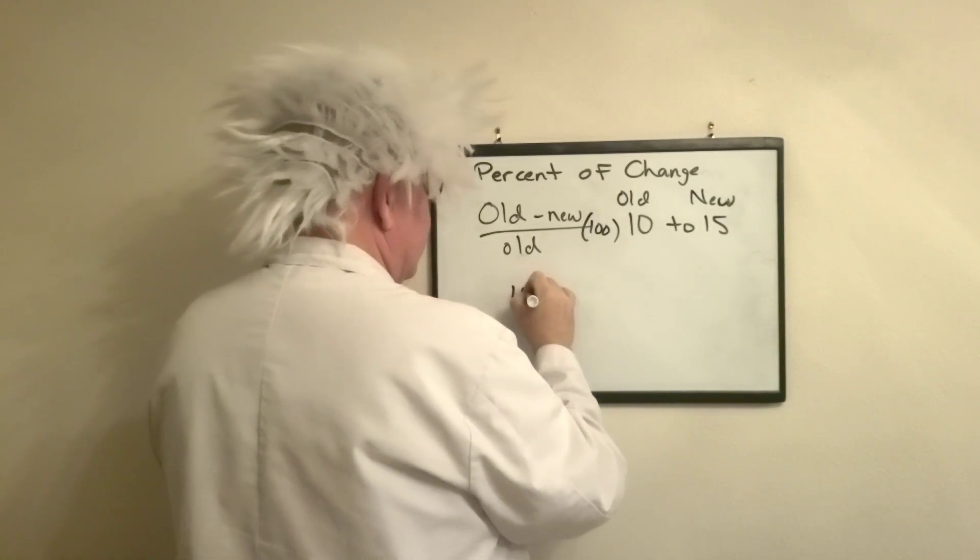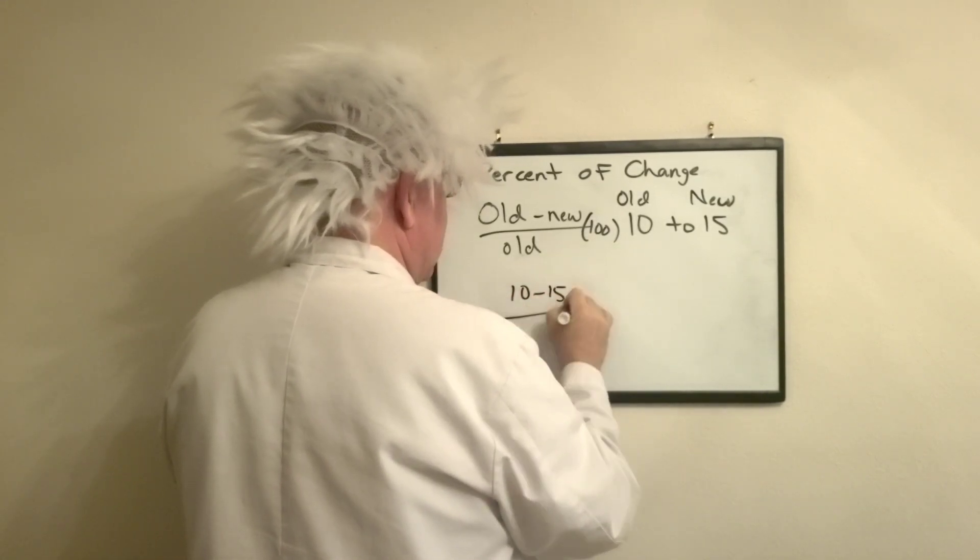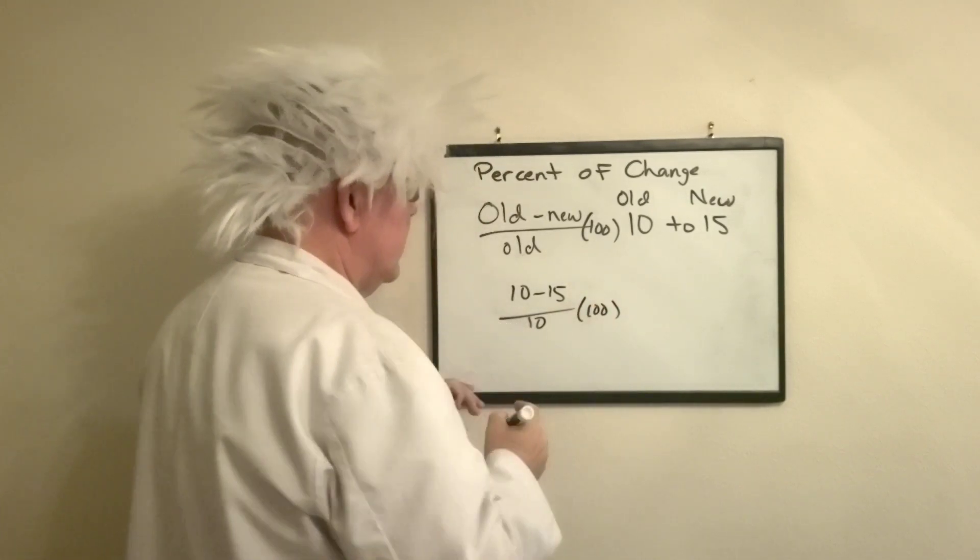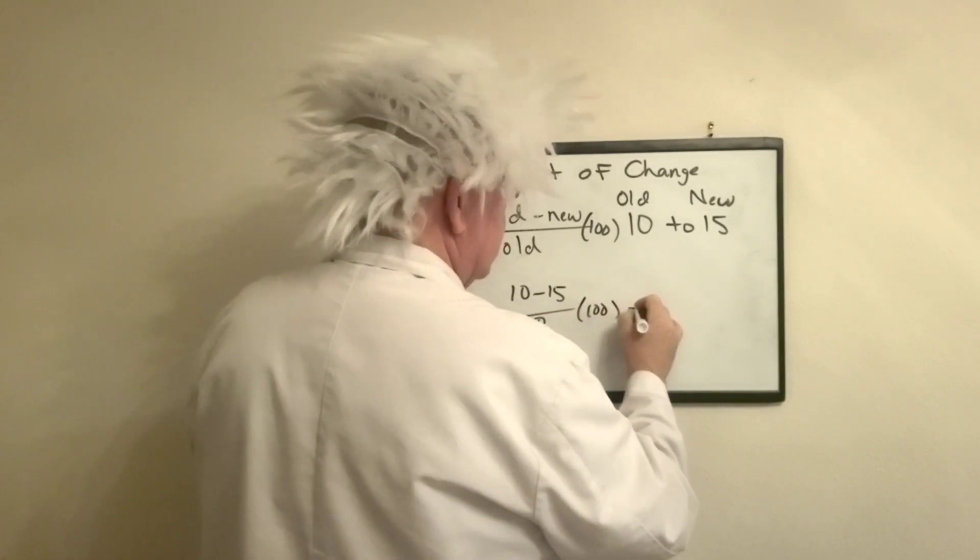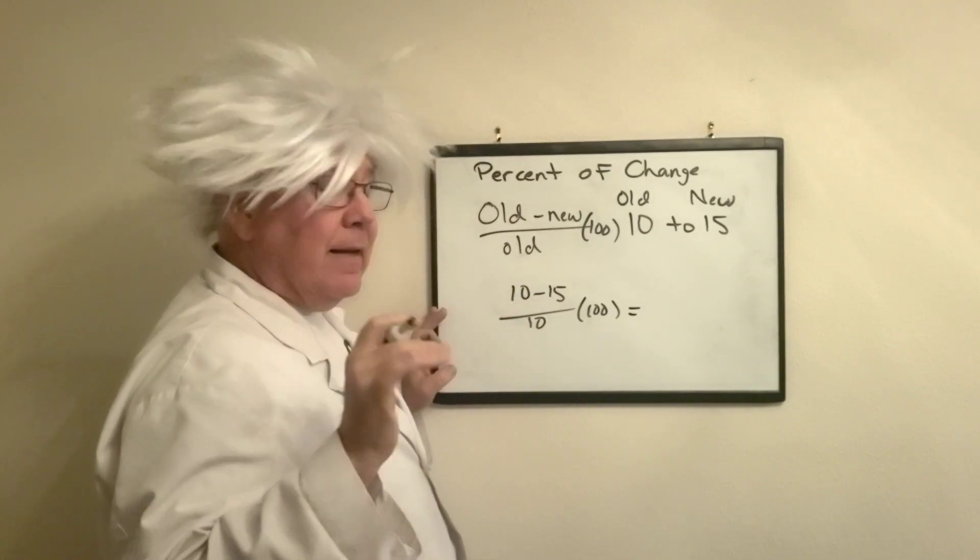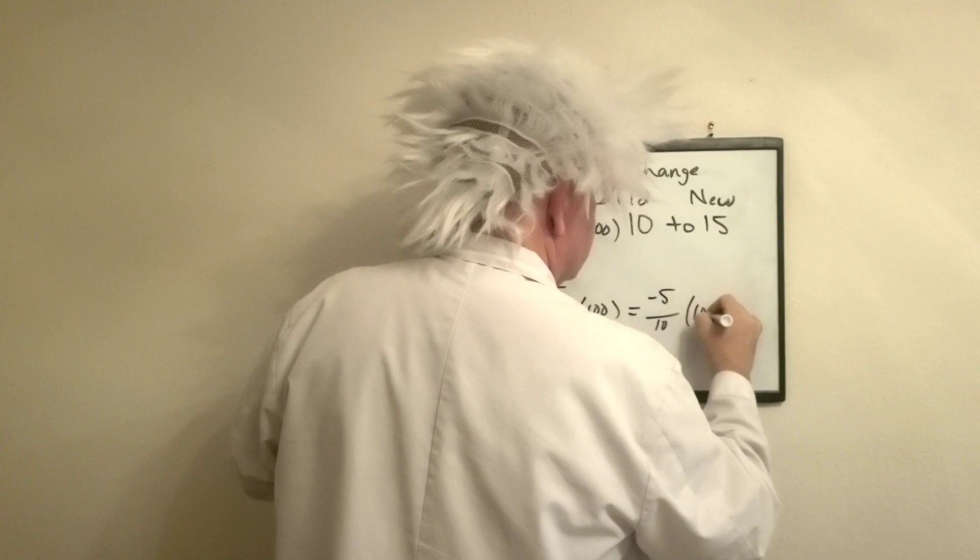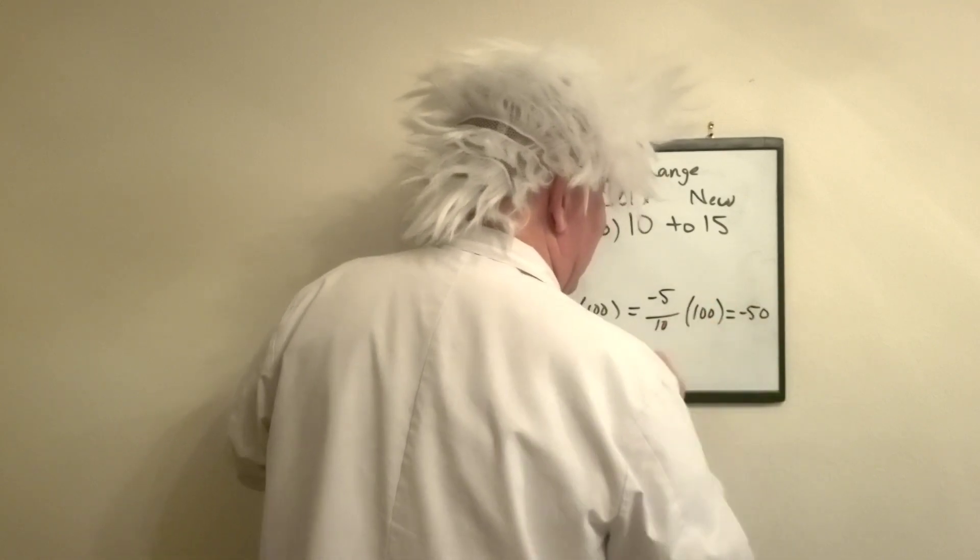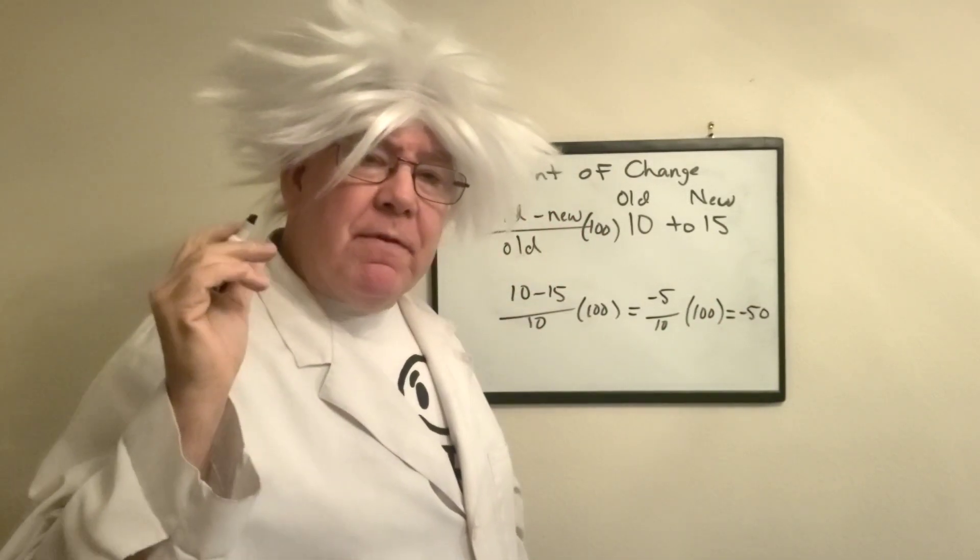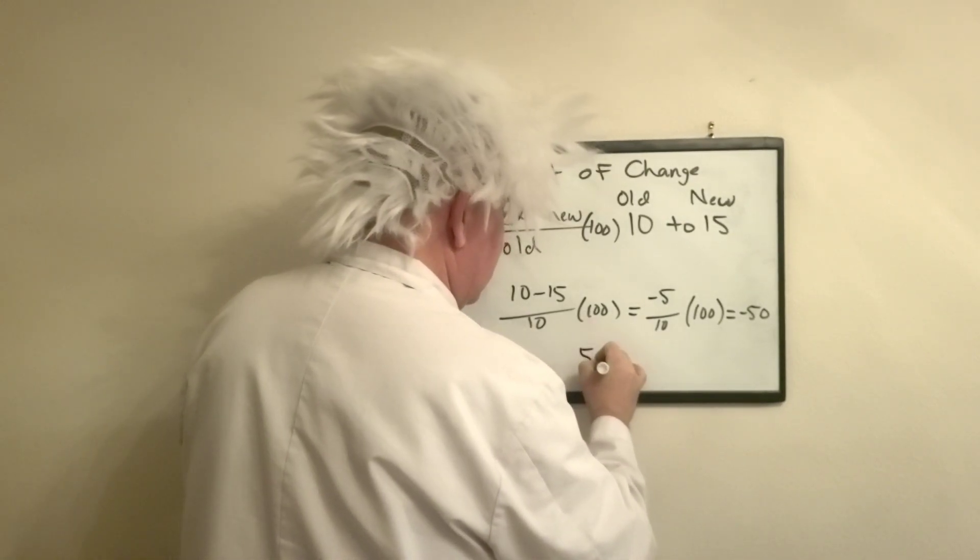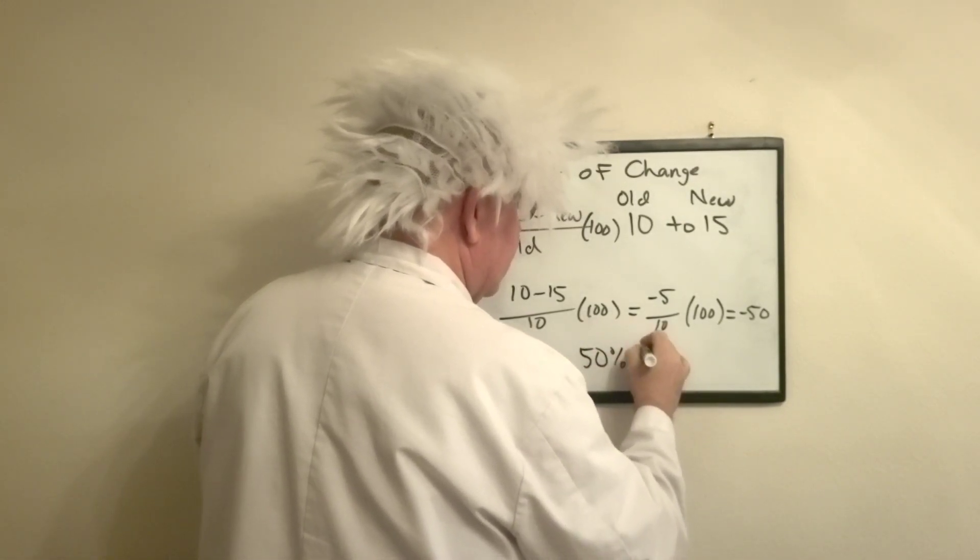So 10 minus 15 over 10 times 100. So that becomes, remember what I said, this is negative 5 over 10 times 100, which is negative 50. Remember what I told you: if you have a negative value, that means an increase. So this is going to be a 50% increase.